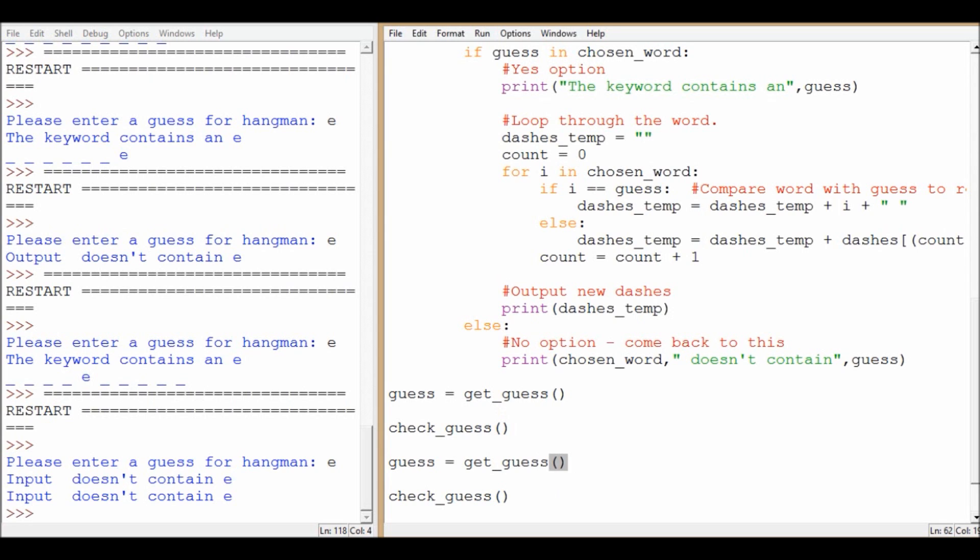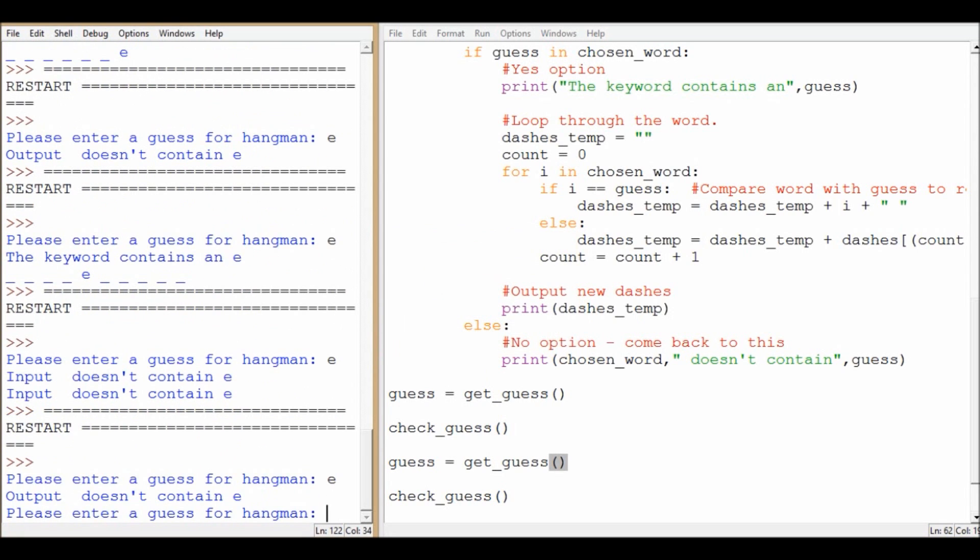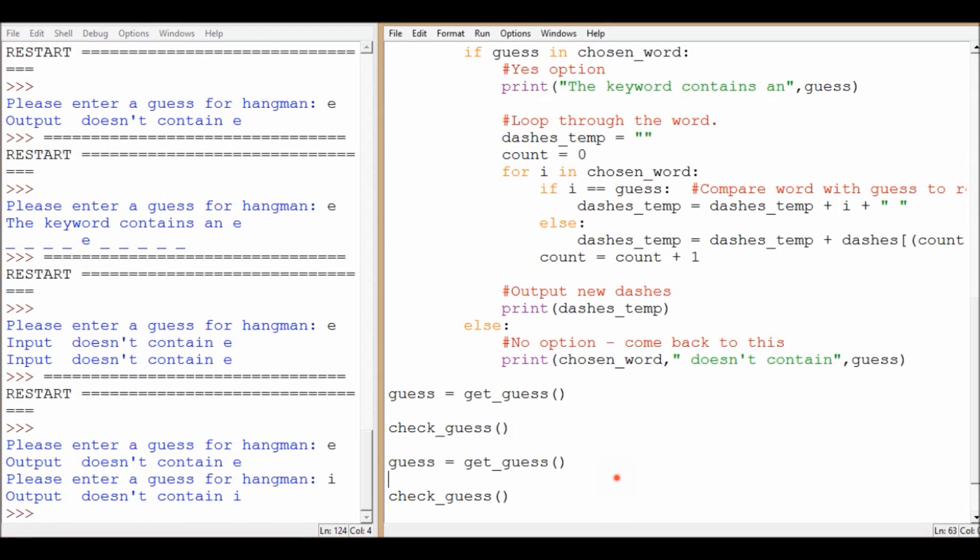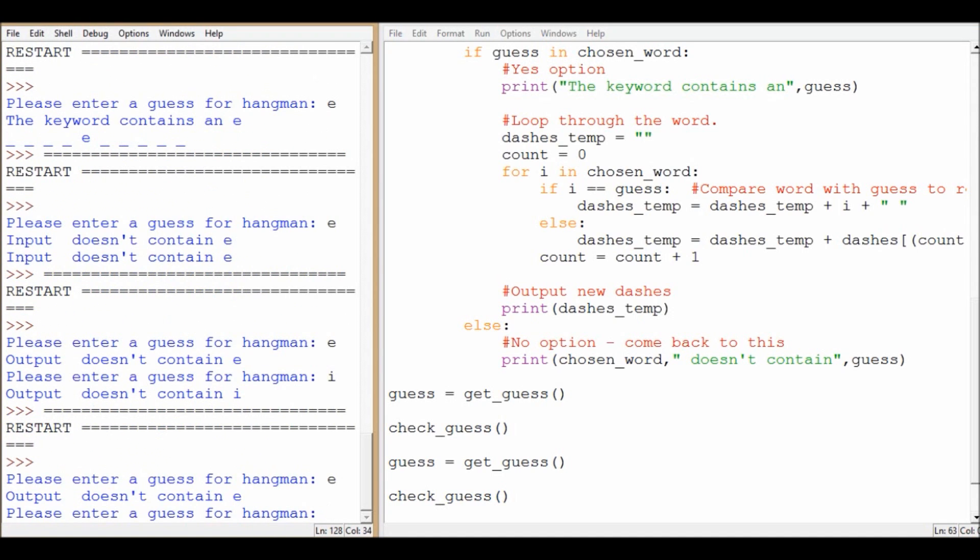Let's have a look. So my first guess is E. It doesn't contain an E. Let's try something else. And it doesn't contain. So you can see the difference between the two ones that I've tried because output doesn't contain either of them. Let's try it. Let's try it one more.